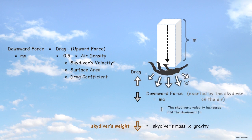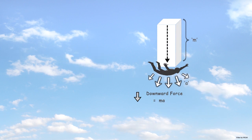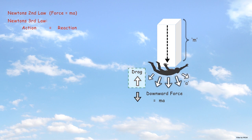The skydiver's velocity increases until the downward force exerted on the air by the skydiver equals the skydiver's mass at terminal velocity. Due to Newton's third law of action and reaction, drag is the equal and opposite upward force on the skydiver.